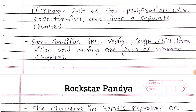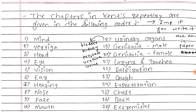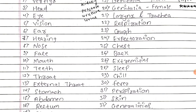Some conditions like vertigo, cough, chill, fever, vision, and hearing are given as separate chapters. The chapters in Kent's Repertory are given in a specific order which is very important to remember. If you are able to write it down in the paper it would be very helpful.